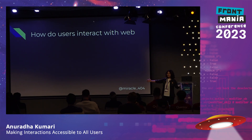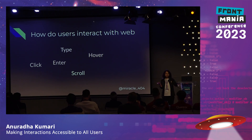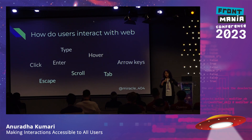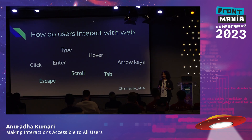Let's revisit how users interact with the web. Apart from the basics, things that don't come to mind first are keyboard navigations — enter, tab, escape, arrow keys, and so on. There are different ways users interact, and we often miss testing these extra interactions. We just go with the usual flow, which is common to us. But we need to be mindful of how different users interact in real time.